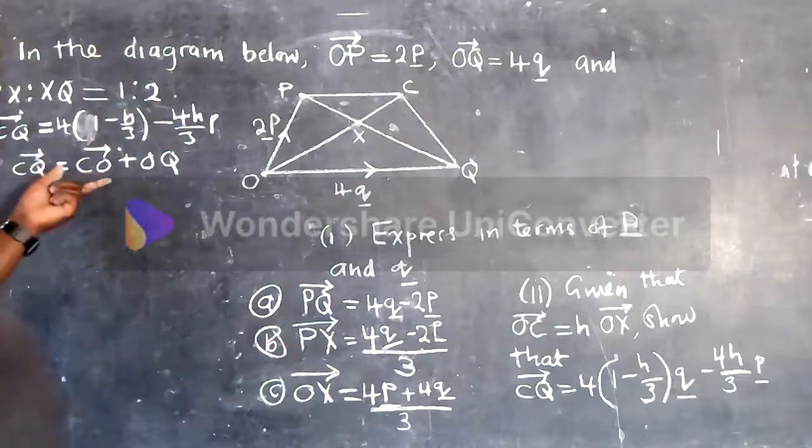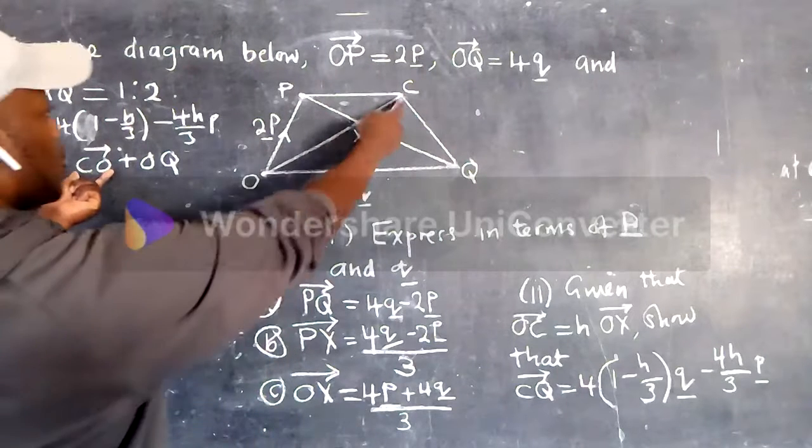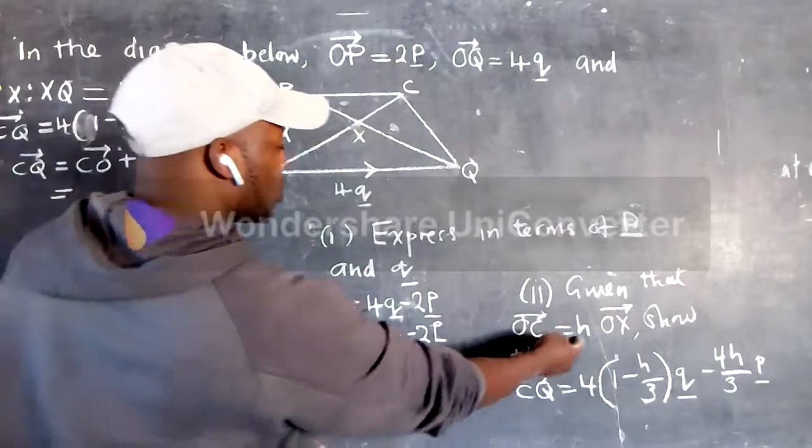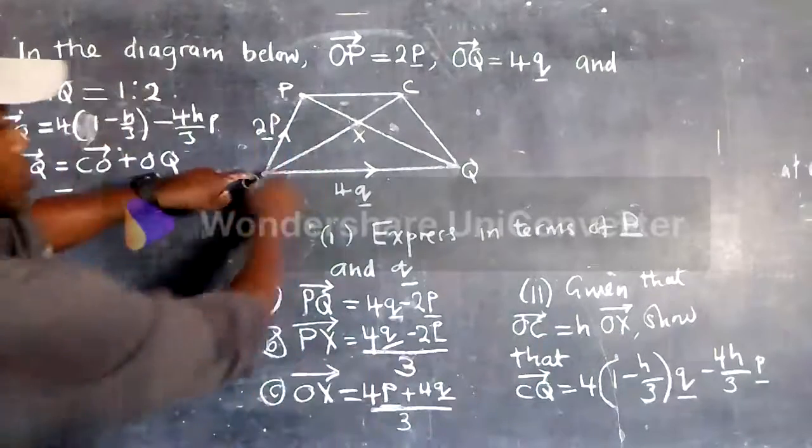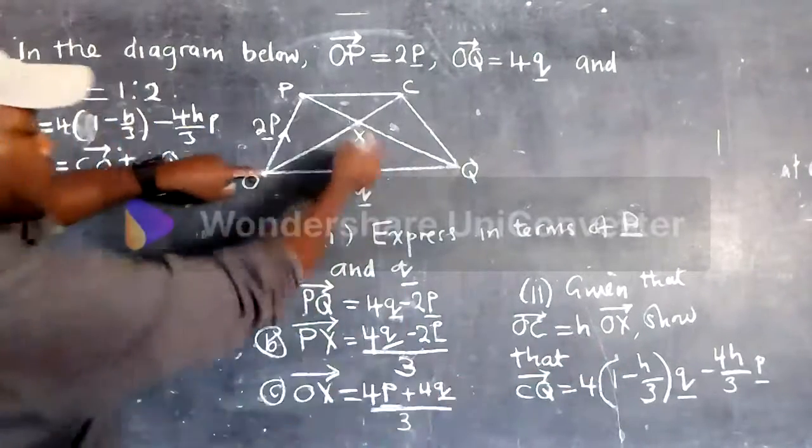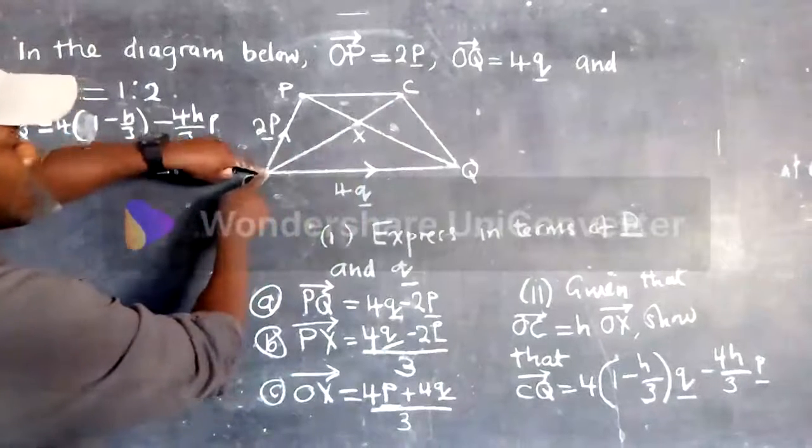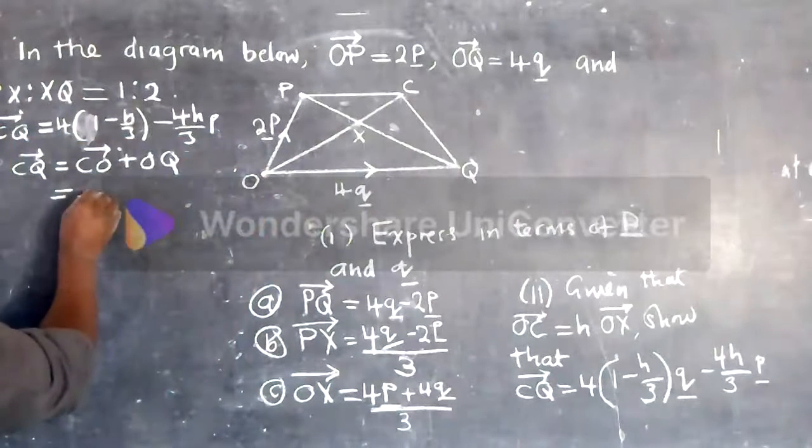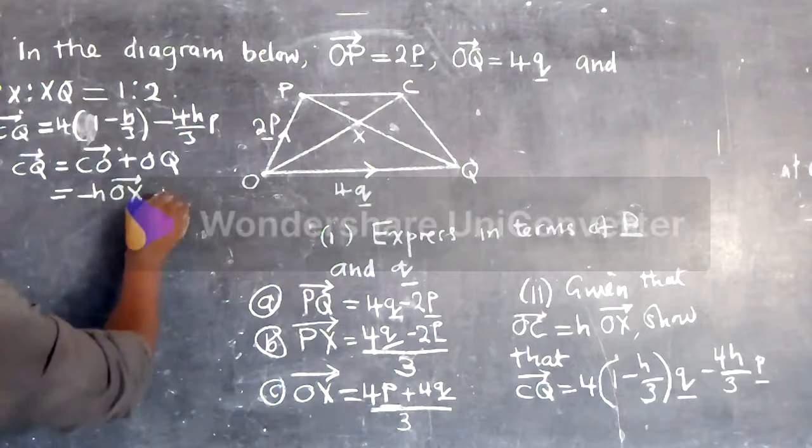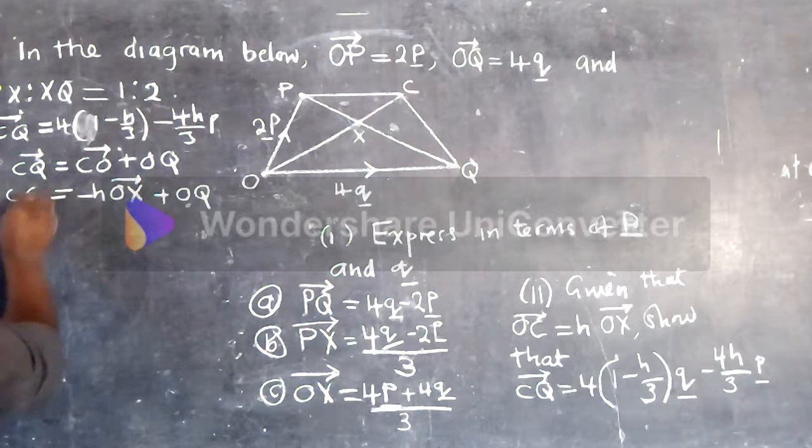So if we check, we have C, CO. We don't have, let's check on this statement here and let's say OC is equal to H by OX. So this means CO will be equal to negative H OX plus OQ. So this is it.